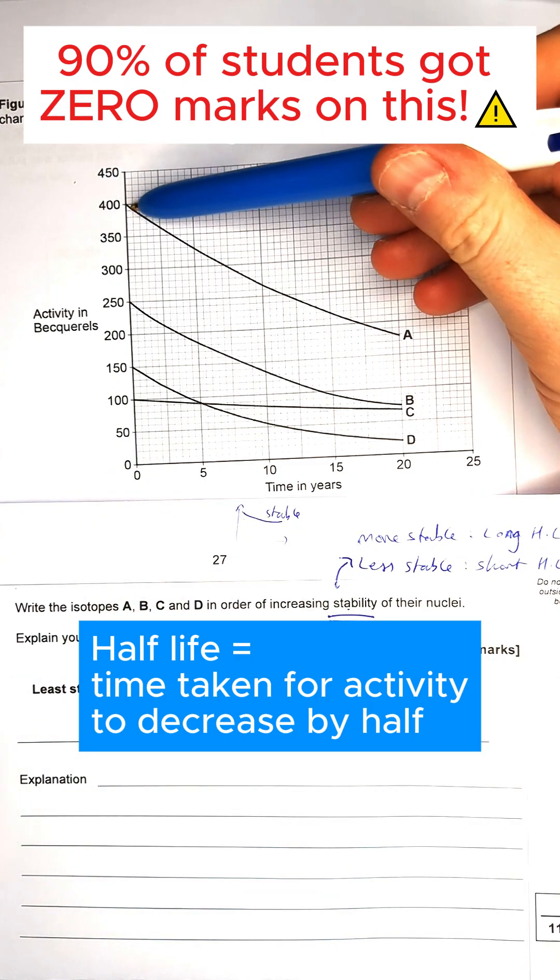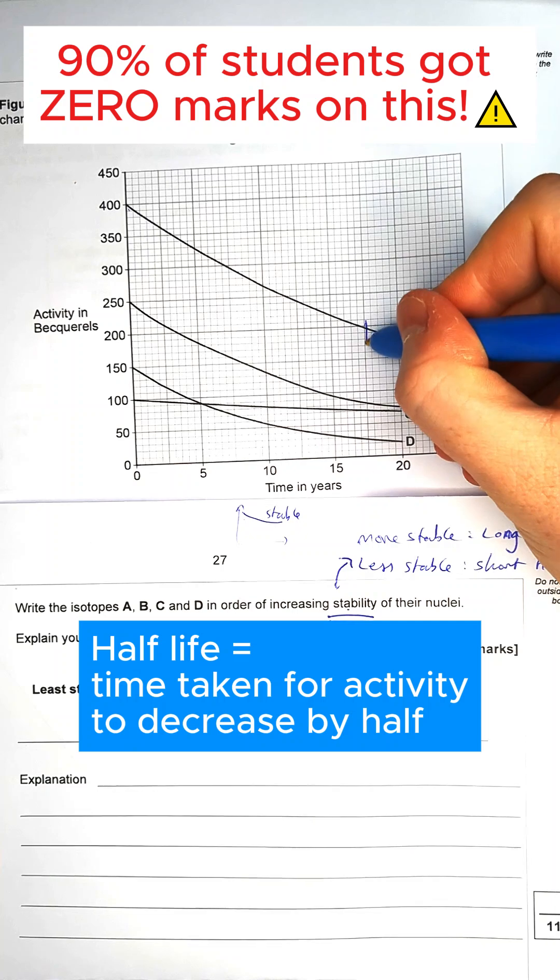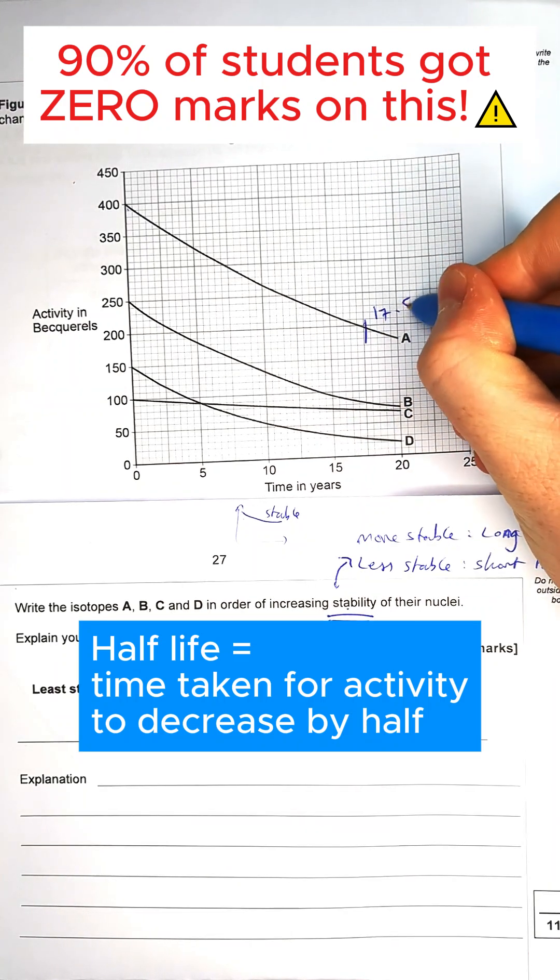So let's do one at a time. Just do it quickly, we've got 400 to 200. For A, that is going to be about here, so that's going to be about 17.5 years.